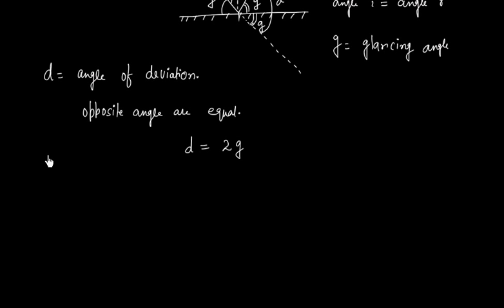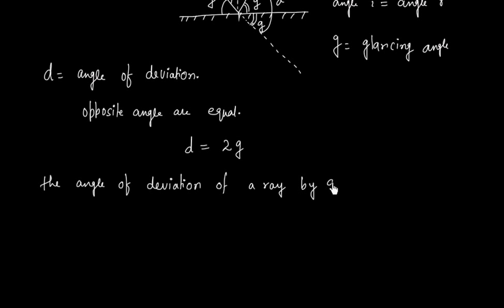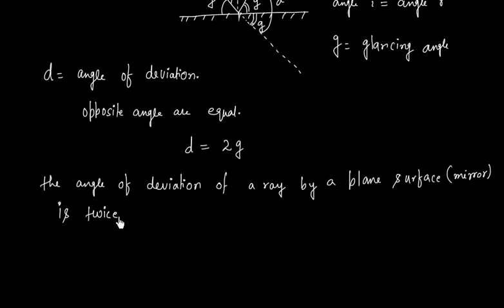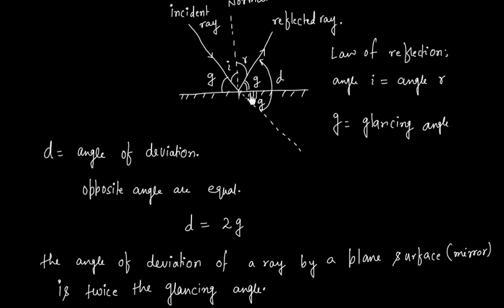In general we can say the angle of deviation of a ray by a plane mirror or plane surface is twice the glancing angle. So whenever a light ray is incident on a plane surface, the deviation is twice the glancing angle. You can remember this result: deviation is twice the glancing angle.